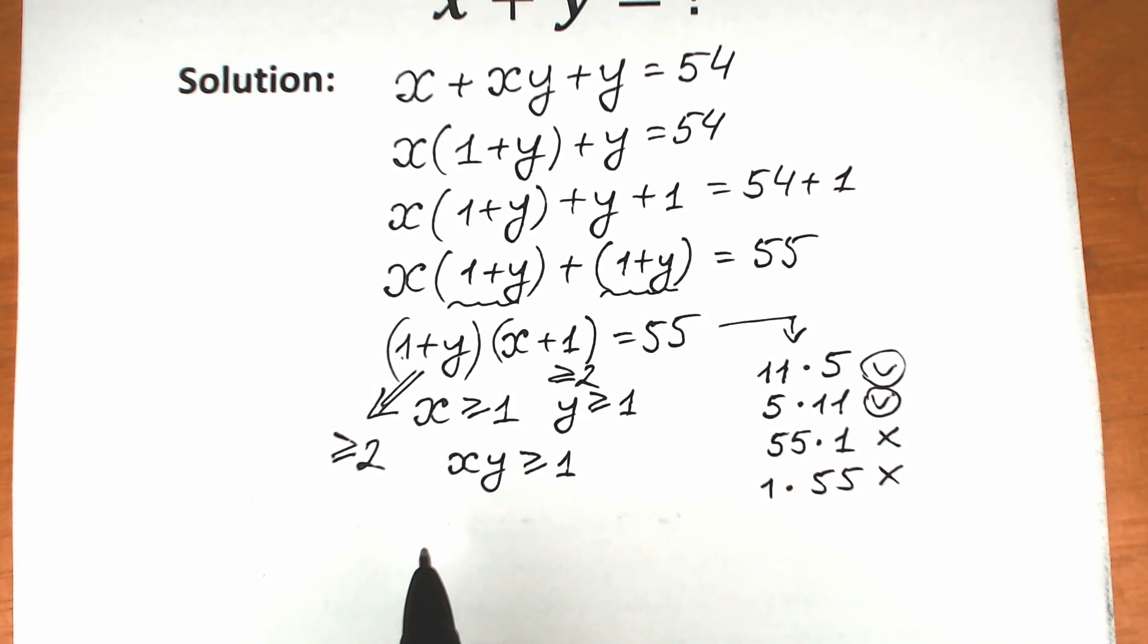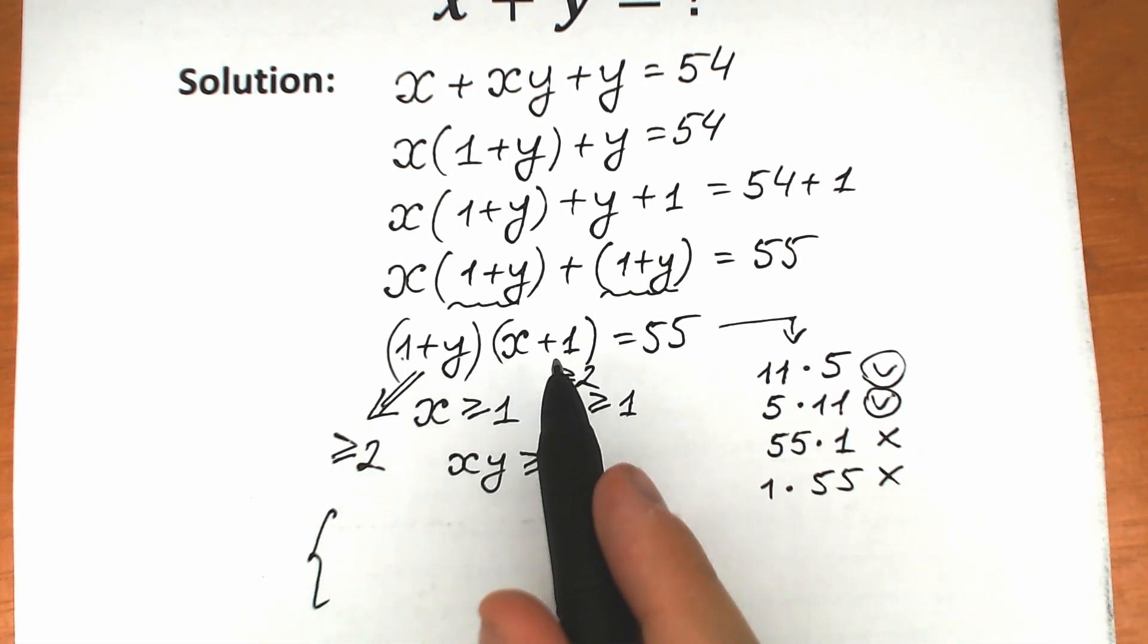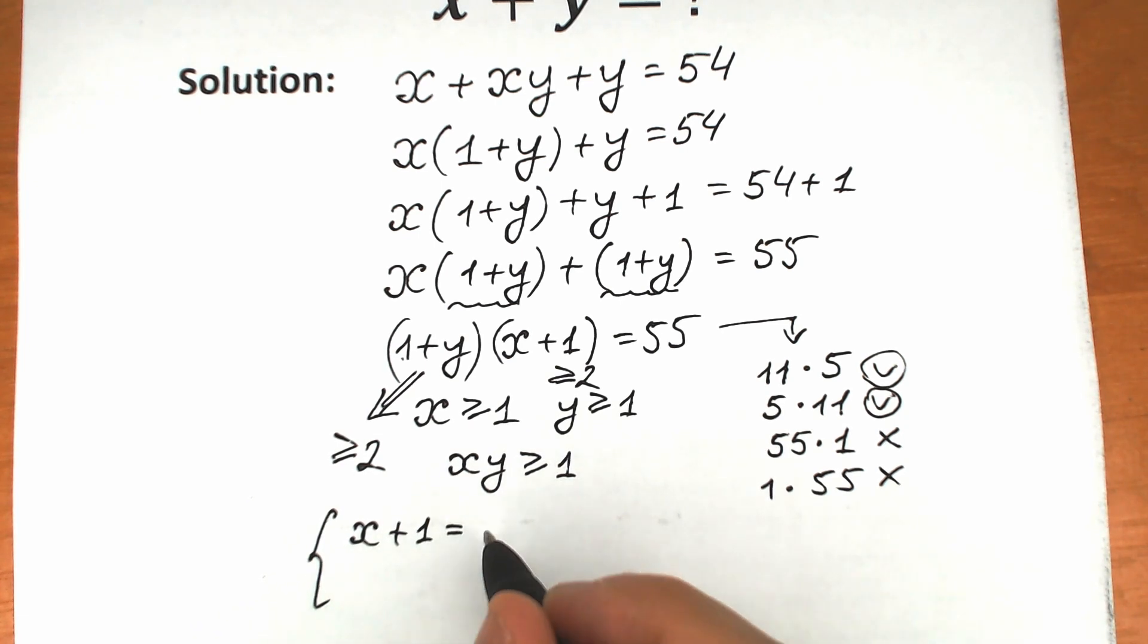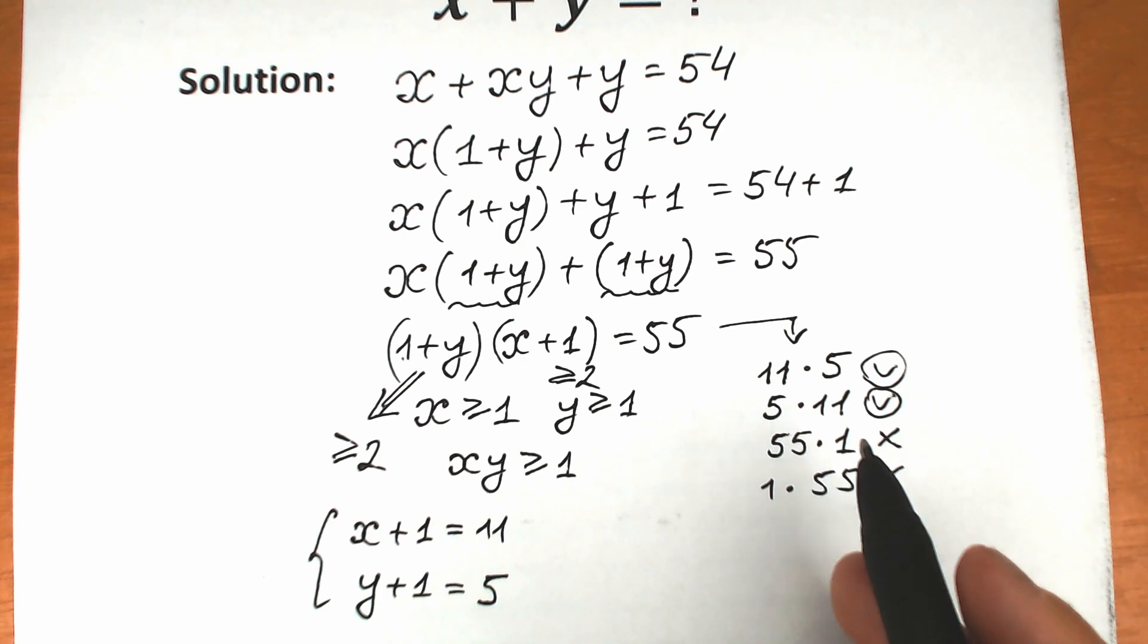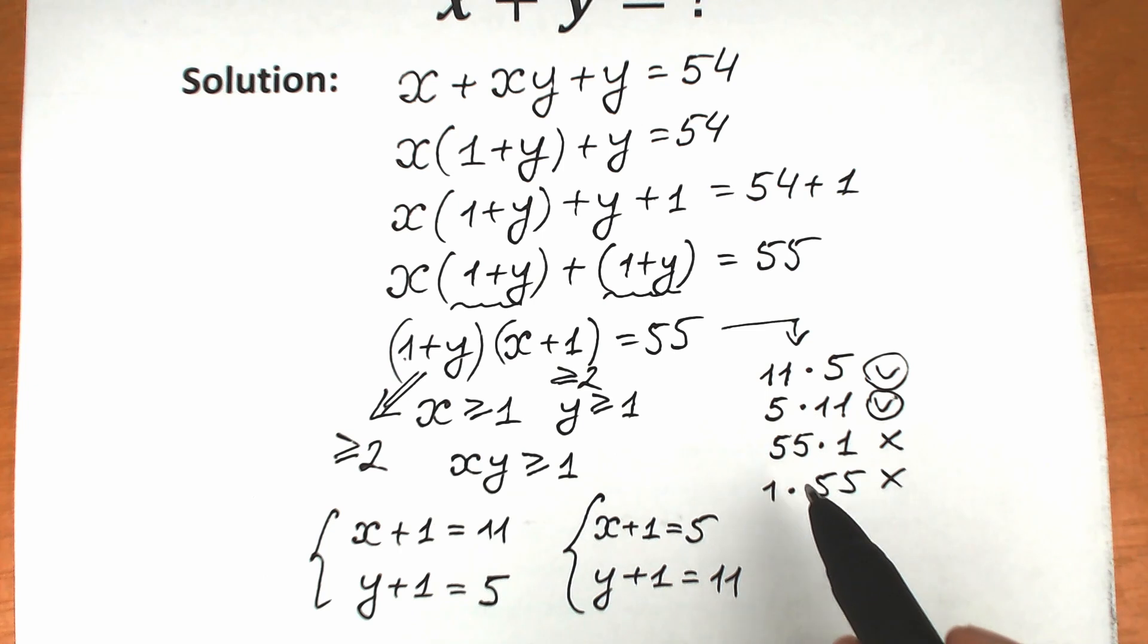So we have two systems of equations. The first system: x plus 1 equals 11, and y plus 1 equals 5. And the second system: x plus 1 equals 5, and y plus 1 equals 11. We reject the other two cases.